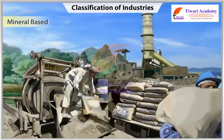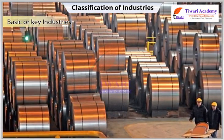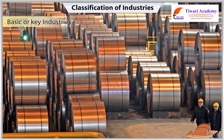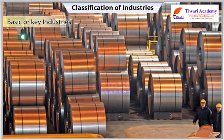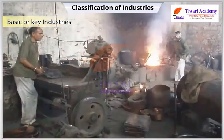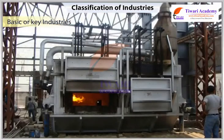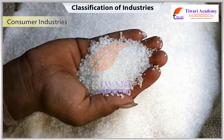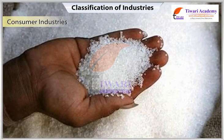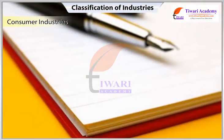According to their main role: Basic or key industries supply their products or raw materials to manufacture other goods — for example, iron and steel, copper smelting, and aluminum smelting. Consumer industries produce goods for direct use by consumers, such as sugar, toothpaste, and paper.